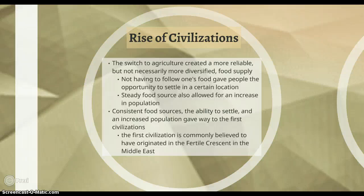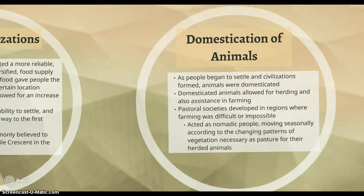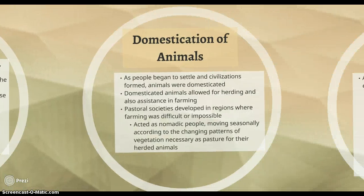Also, the switch to agriculture and a more reliable food supply led to an increase in population. They all started to settle together in sedentary settlements. The first civilization was in the Fertile Crescent. Domestication of animals stemmed from living together in settlements. Animals were used for herding and assistance in farming, like pulling plows.